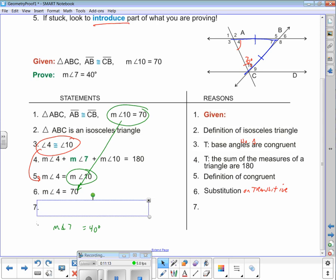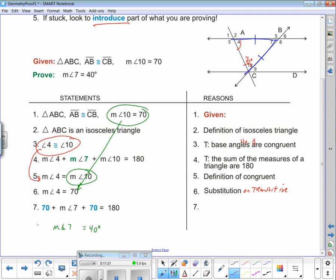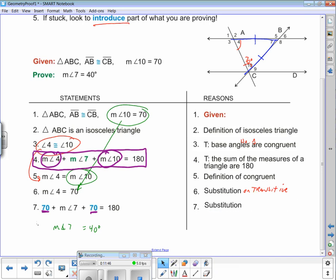Look at the next step. Because the measure of angle 4 equals 70, I am now back to statement number 4, my key statement that got that 7 in there. Where 4 is, I put in 70. Where the measure of angle 10 was, I put in what it equaled, 70. This is simply a substitution step.